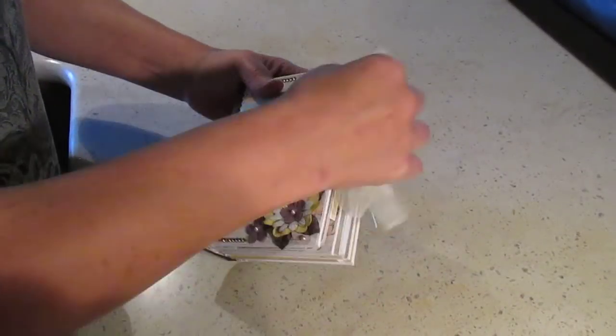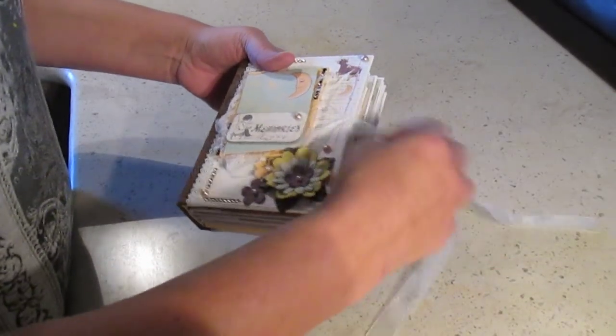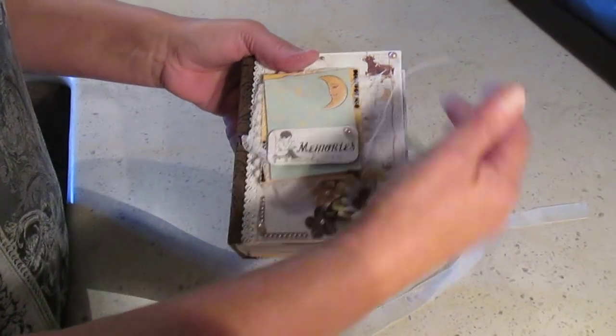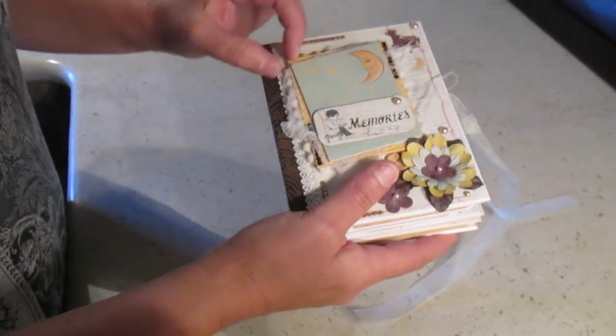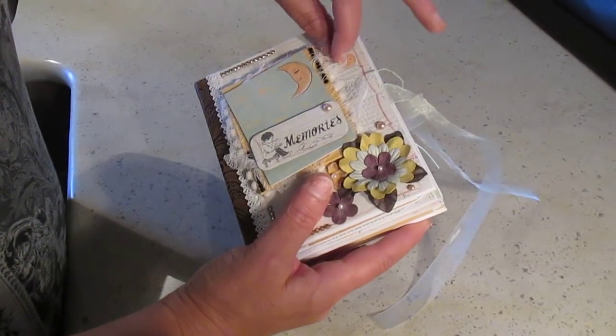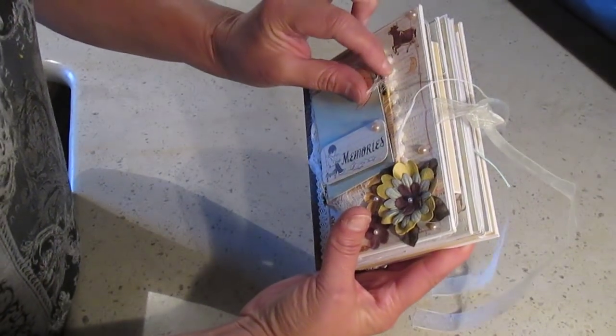Or if she wants to give it to her daughter, she can write down the names of the kids, whatever she wants. And I used some sheer ribbon for the closure. And here I had put some cheese cloth underneath that piece here. And also I have my pea coat underneath.